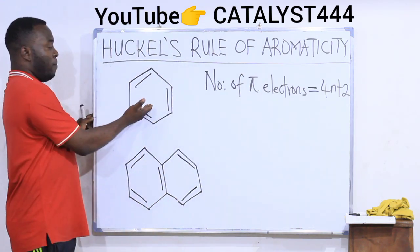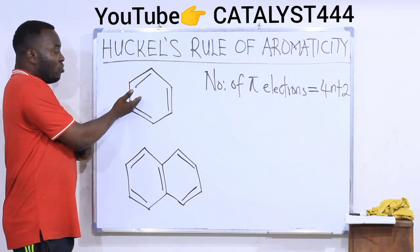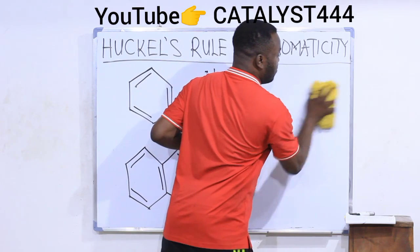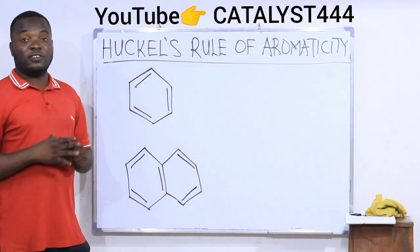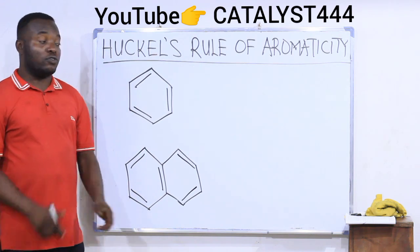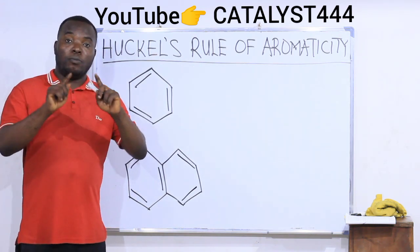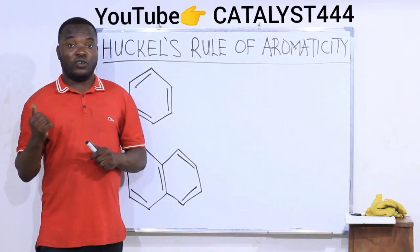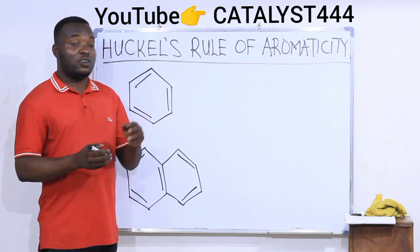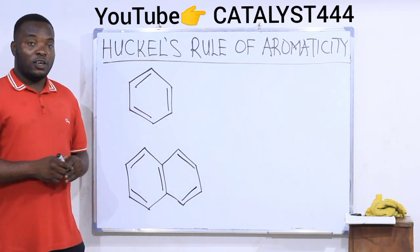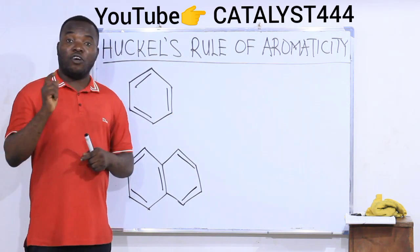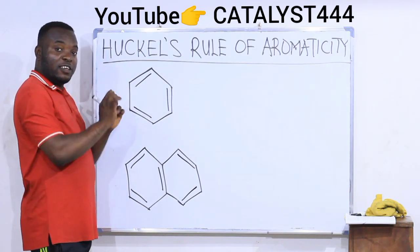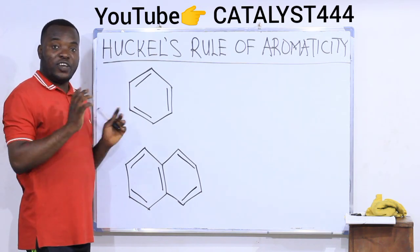Let's take benzene as an example and check if benzene is aromatic. Remember, the four conditions must be obeyed before we can call benzene an aromatic compound. Condition number one says the compound must be cyclic. As you can see, benzene is cyclic, so it has passed the first condition.